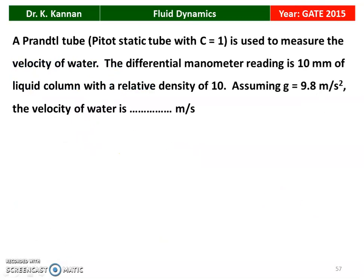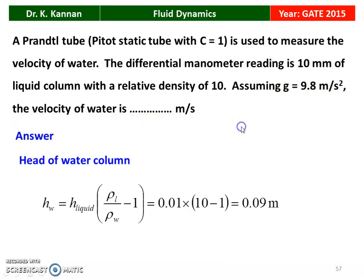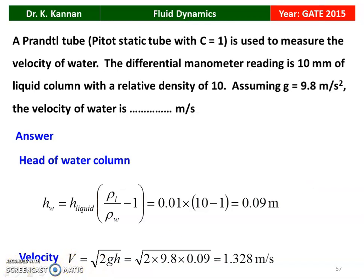The next question from the 2015 question paper: a Prandtl tube — that is a Pitot-static tube — with coefficient of velocity equal to 1 is used to measure the velocity of water. The differential manometer reading is 10 mm of liquid column with relative density 10, and g = 9.8 m/s². The head of water column = head of liquid column × (relative density − 1) = 0.01 × (10 − 1) = 0.09 m. Velocity = √(2gh) = √(2 × 9.8 × 0.09) = 1.328 m/s. The answer is 1.328 meters per second.